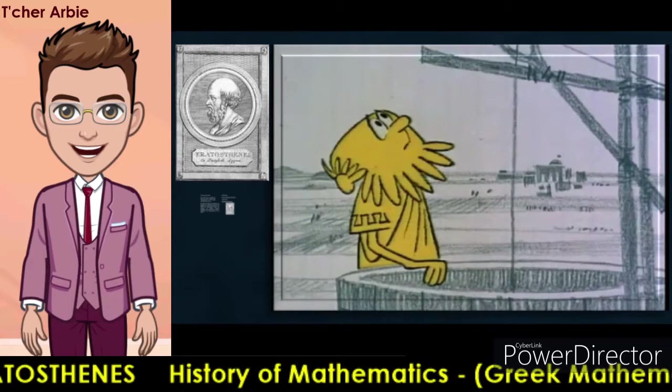The distance around the world must be 50 times the distance from Alexandria to Cyene. With these simple tools, Eratosthenes made this almost exact measurement of the world more than 1700 years before Magellan sailed around it.